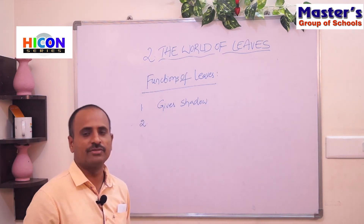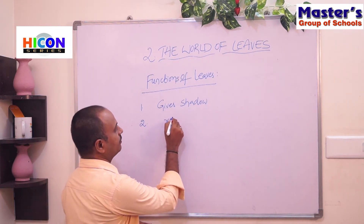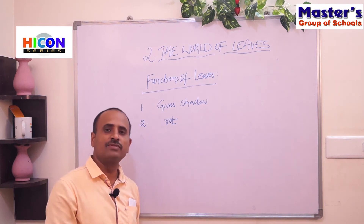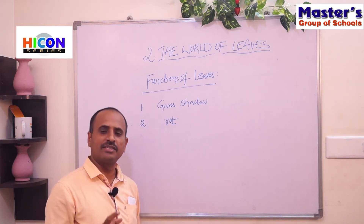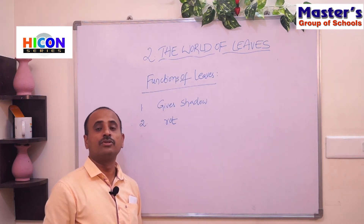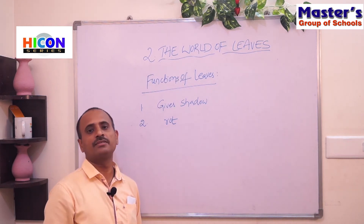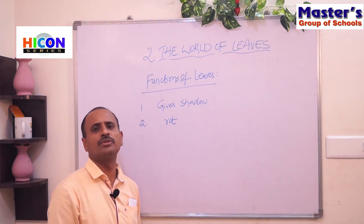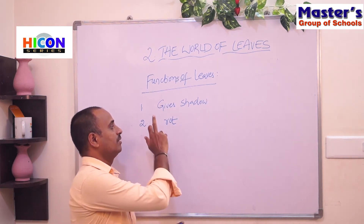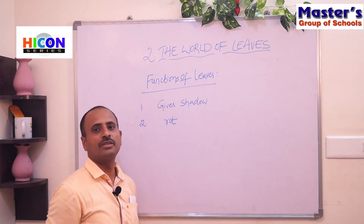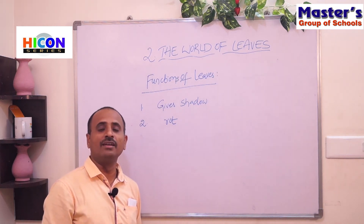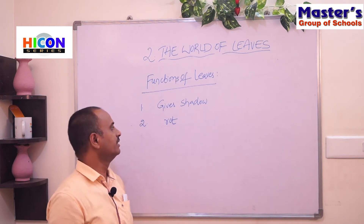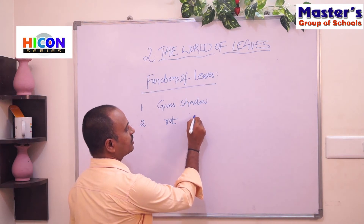The second function: fallen leaves rot and make the soil humus. During some seasons, trees shed their leaves to prevent water loss and retain water in their bodies. Those fallen leaves decompose and convert into compost, becoming rot, which makes the soil very humus. This humus soil is very helpful for the healthy growth of plants.